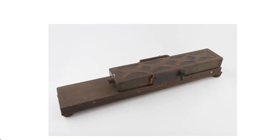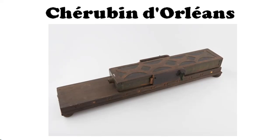The earliest example of a stereomicroscope was designed and built in 1671 by Cherubin d'Orléans, though it was a pseudo-stereoscopic design which had major flaws. Only by application of additional lenses was image erection achieved, and the right-side image was projected to the left eyepiece and vice versa.